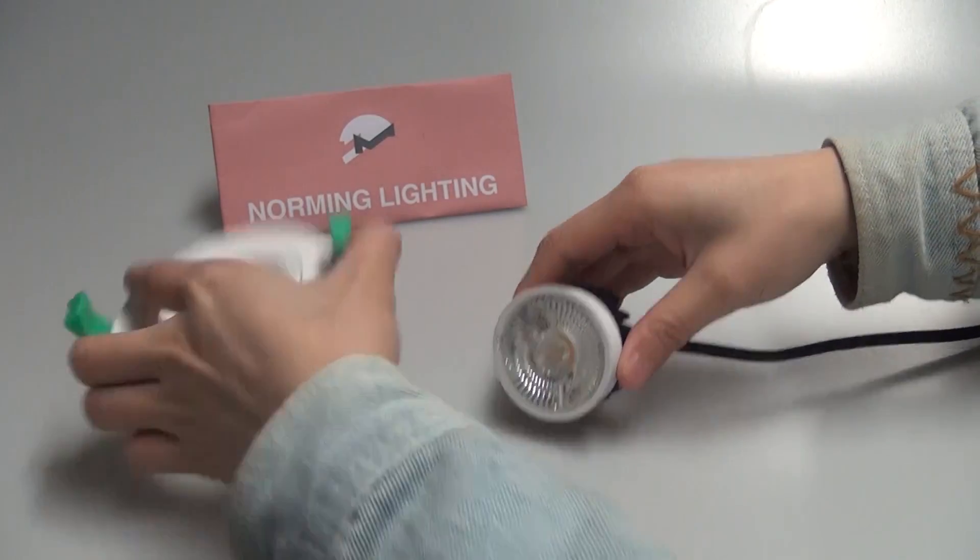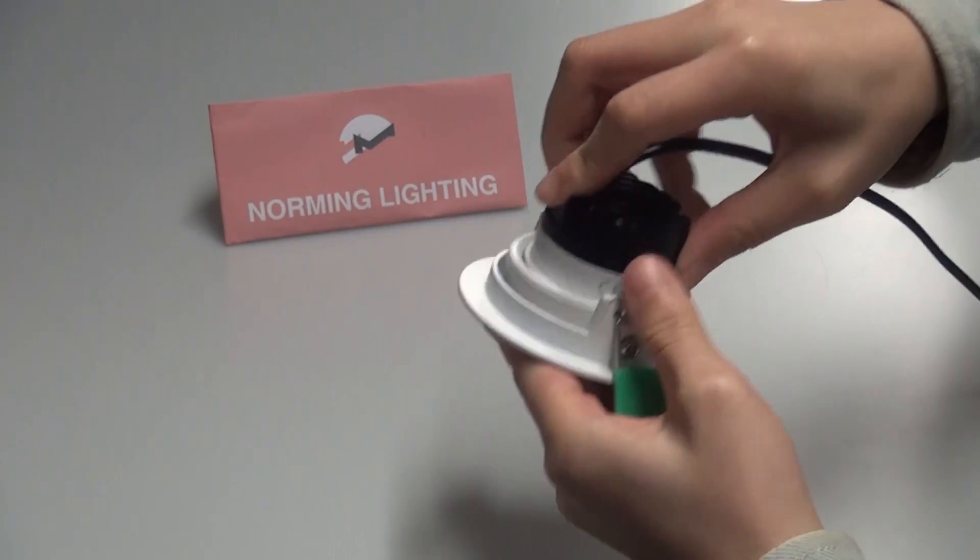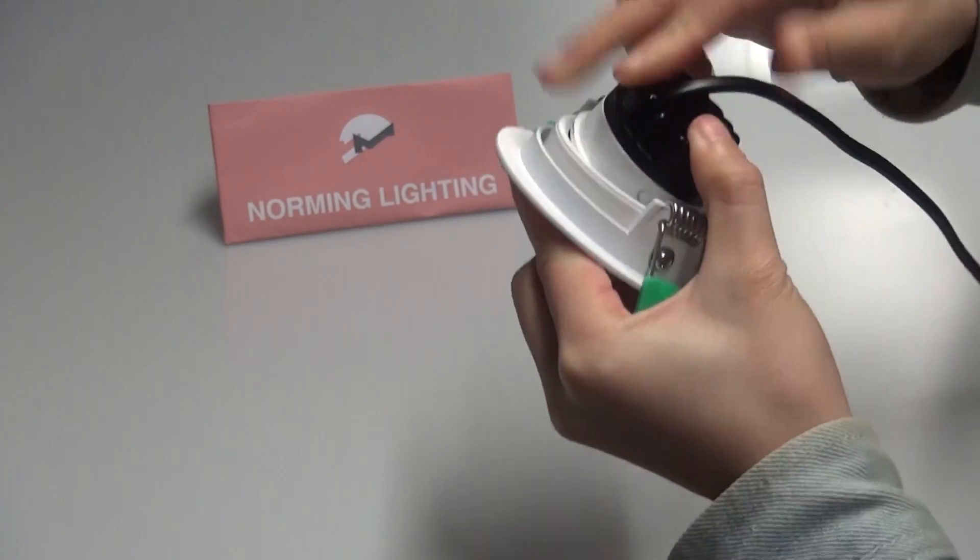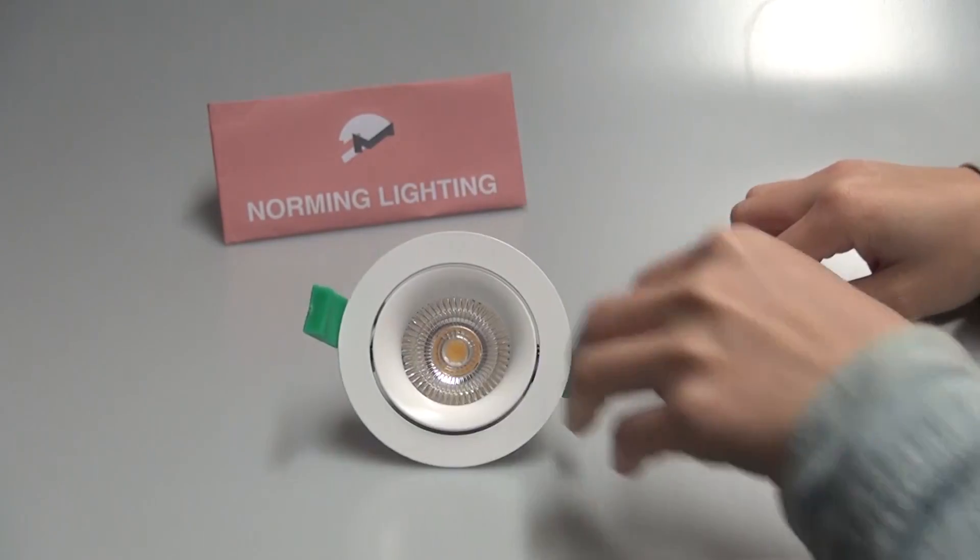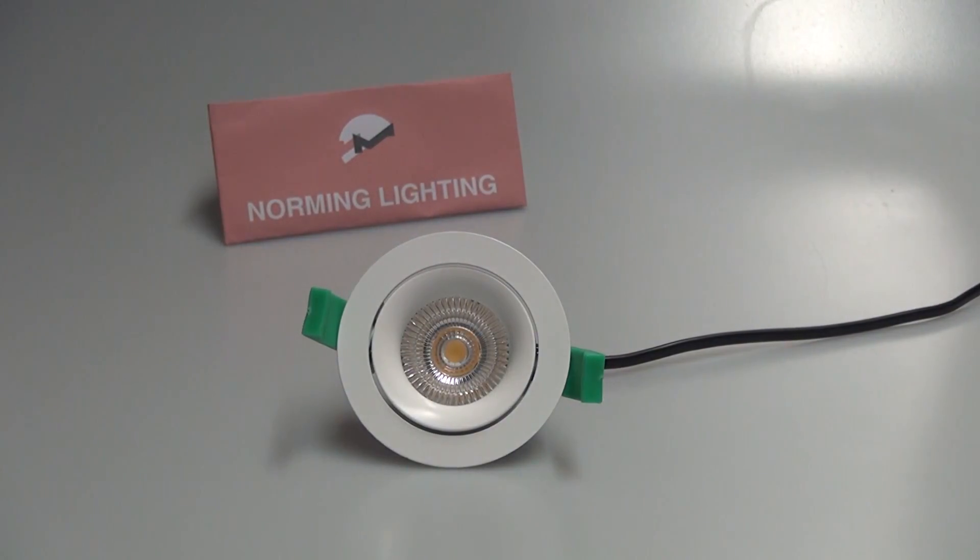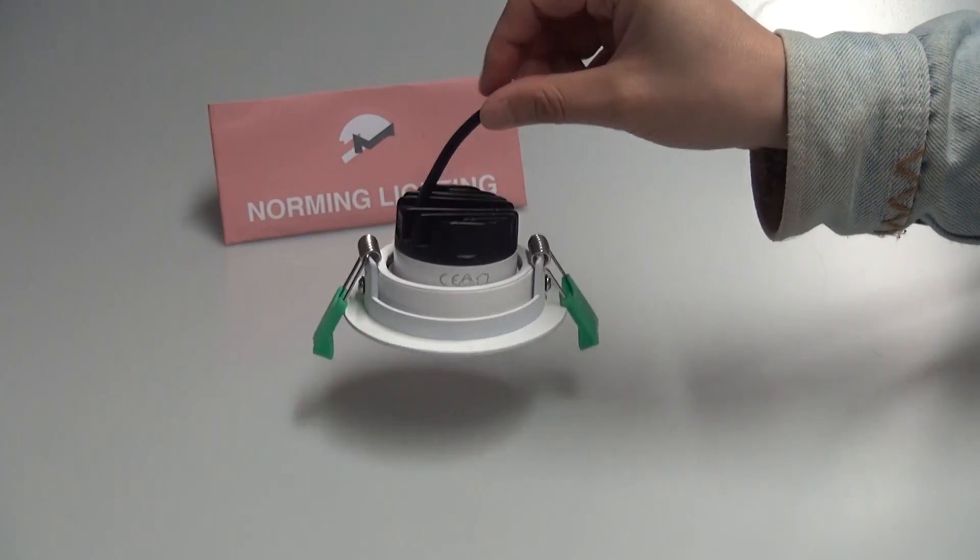Here we go. Pick out the module and the ring. Choose the correct side, and then insert the module into the ring gently. There are two clips in the back of the ring, so the module can be easily fixed.